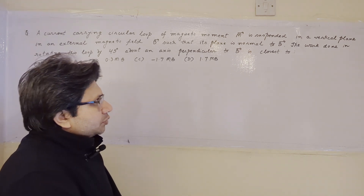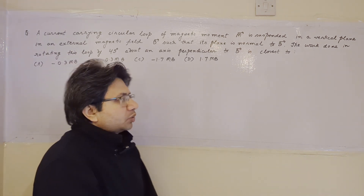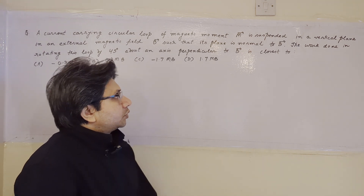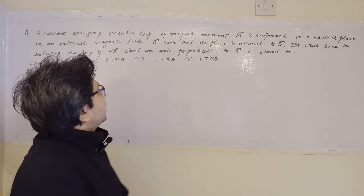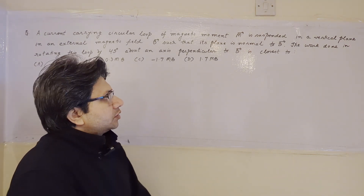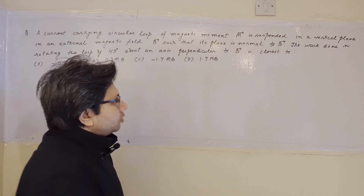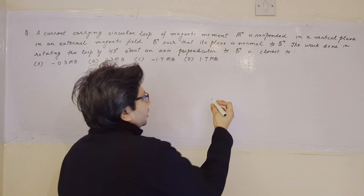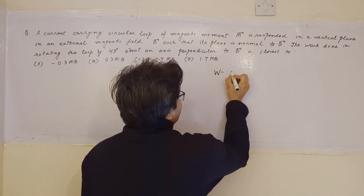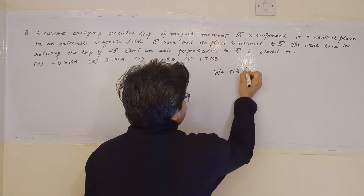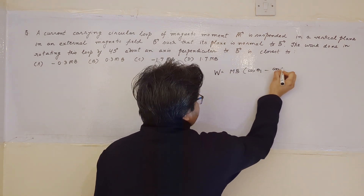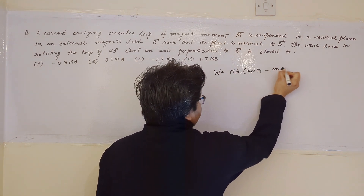This problem is based upon the topic of work done on a circular loop placed in a magnetic field. The basic formula to use is W equals MB times (cos θ₁ minus cos θ₂).